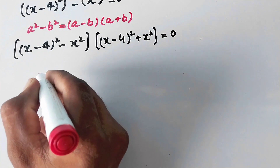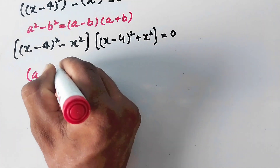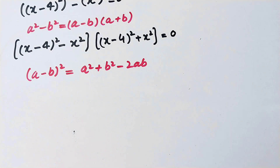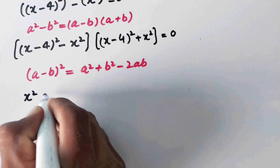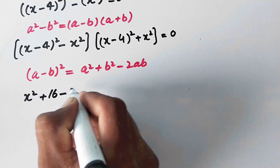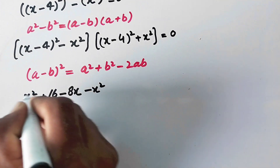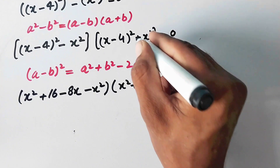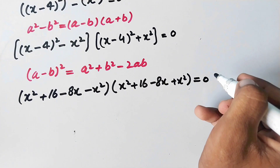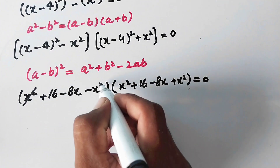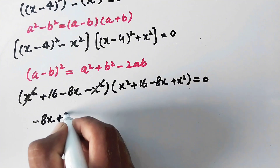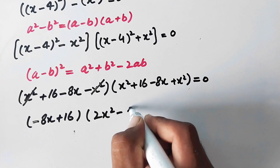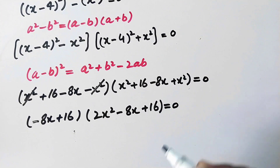Now here again we can apply the algebraic formula: (a minus b) whole square is equal to a squared plus b squared minus 2ab. So now we can write this as (x^2 + 16 - 8x - x^2) times (x^2 + 16 - 8x + x^2) equal to 0. The x squared terms cancel, and we are left with (-8x + 16) times (2x^2 - 8x + 16) is equal to 0.